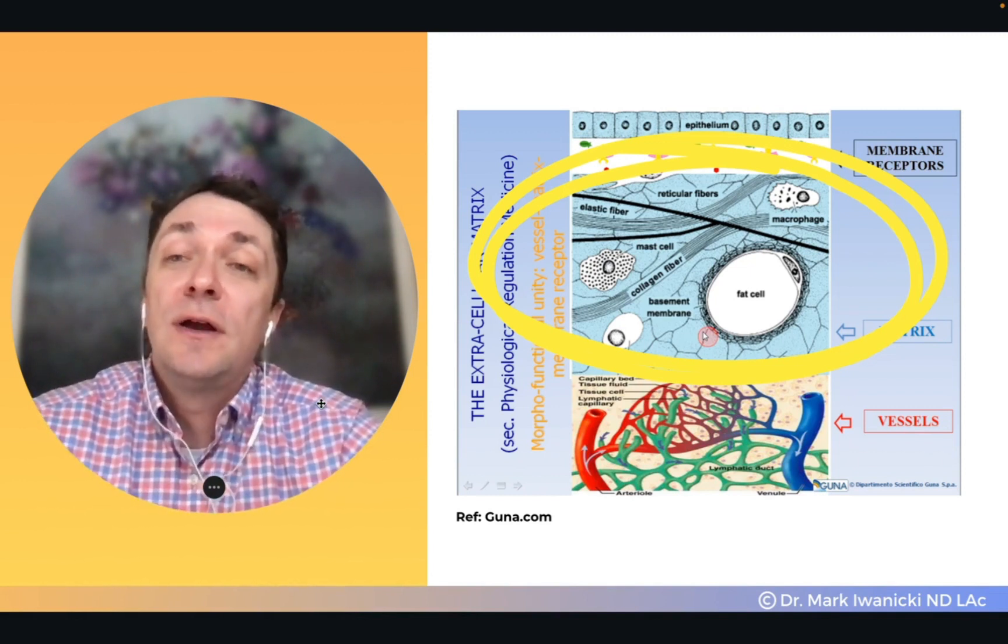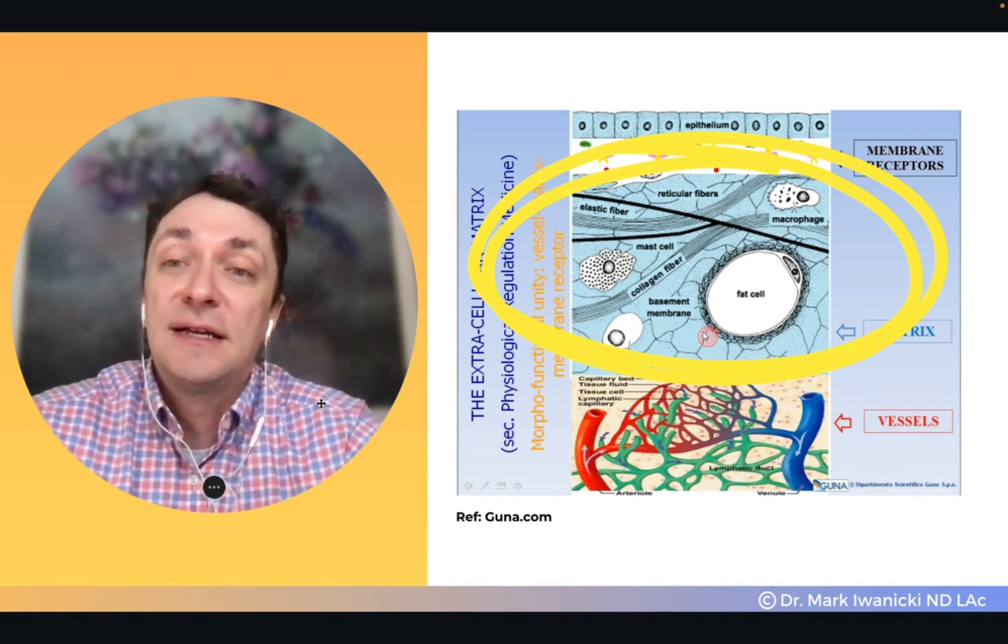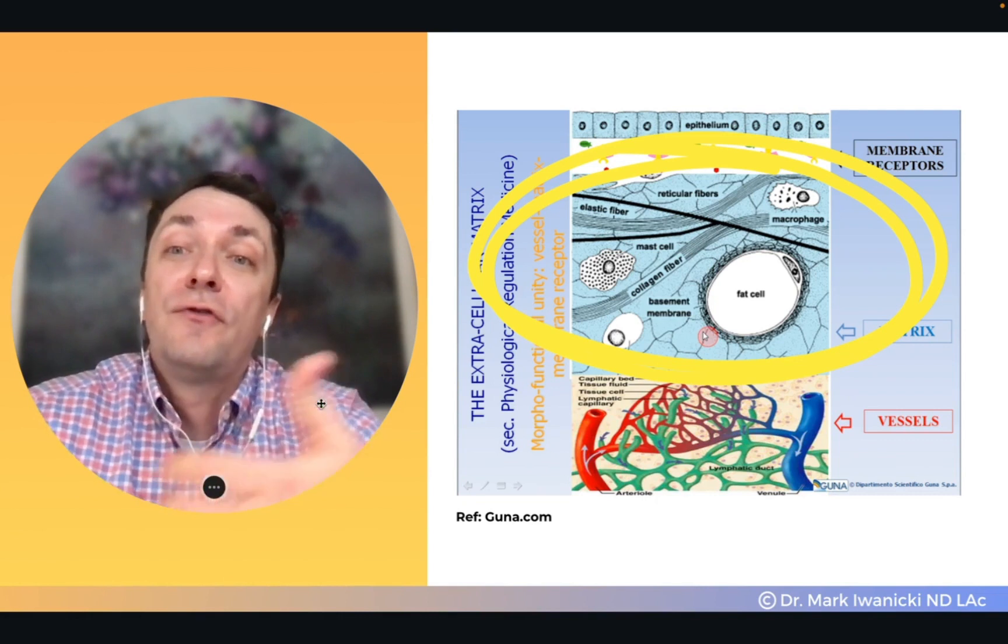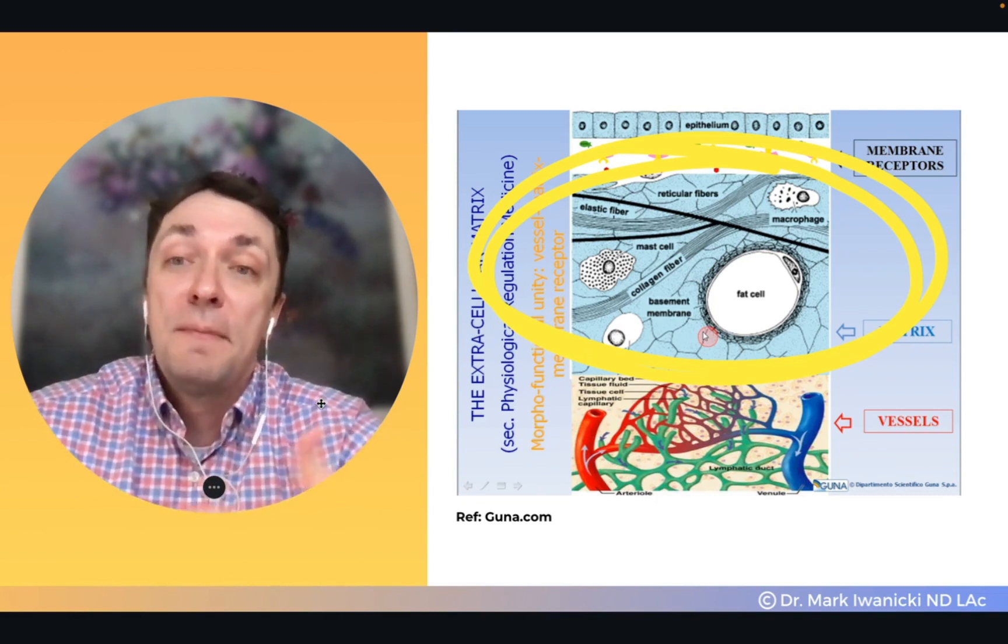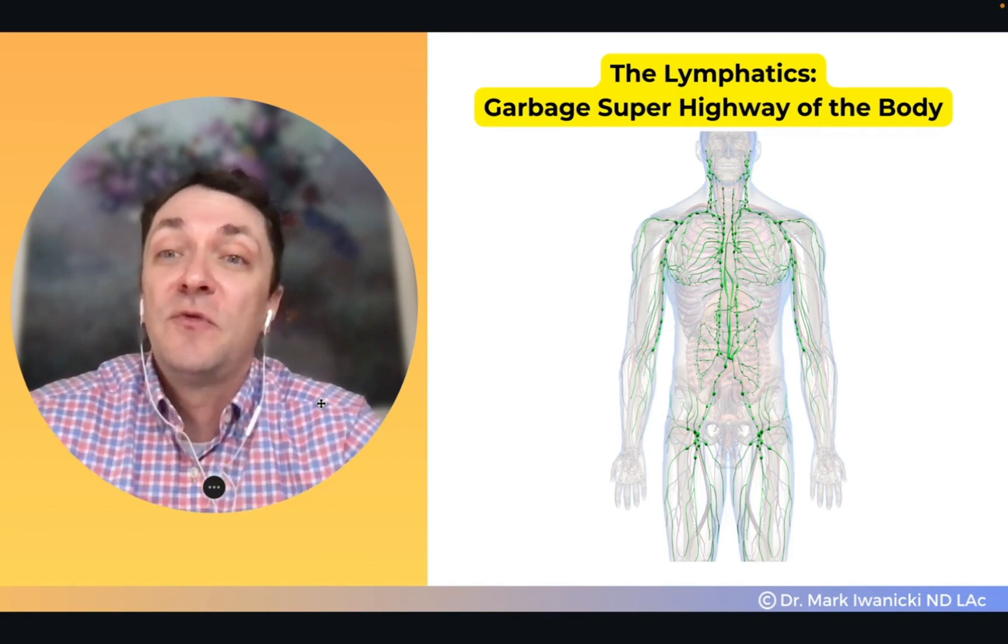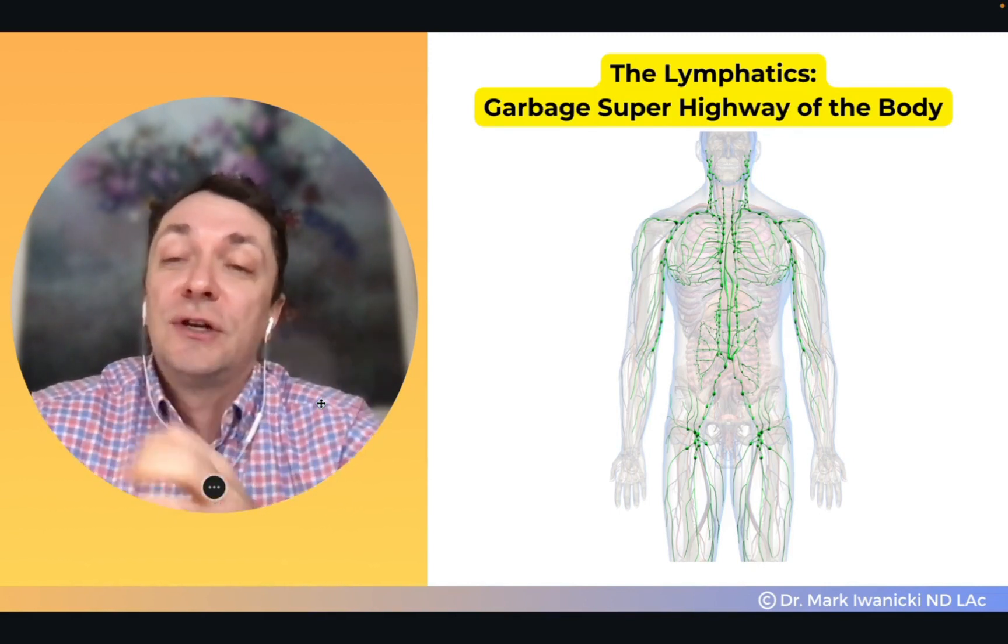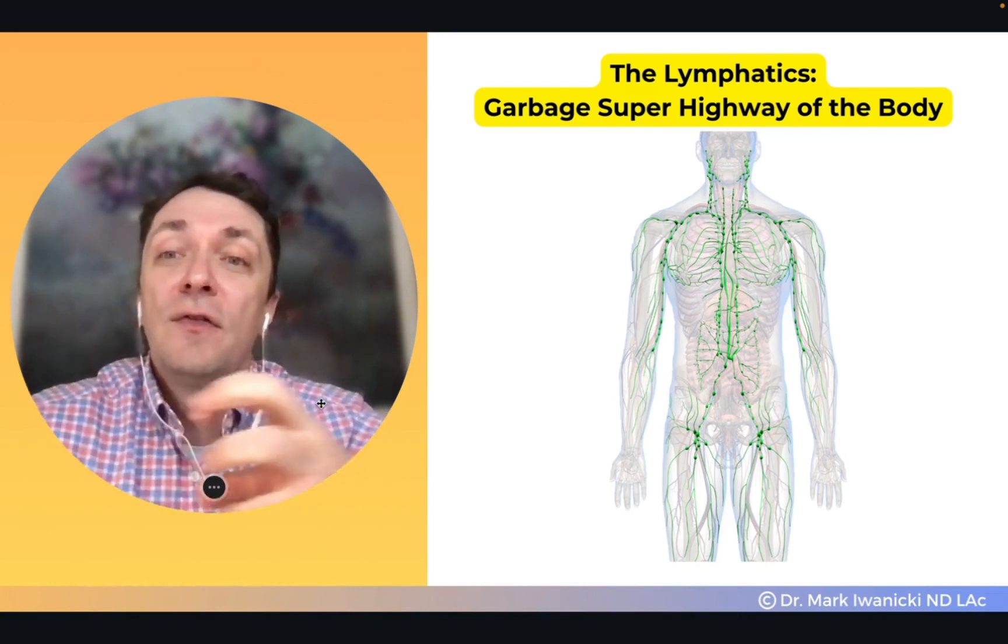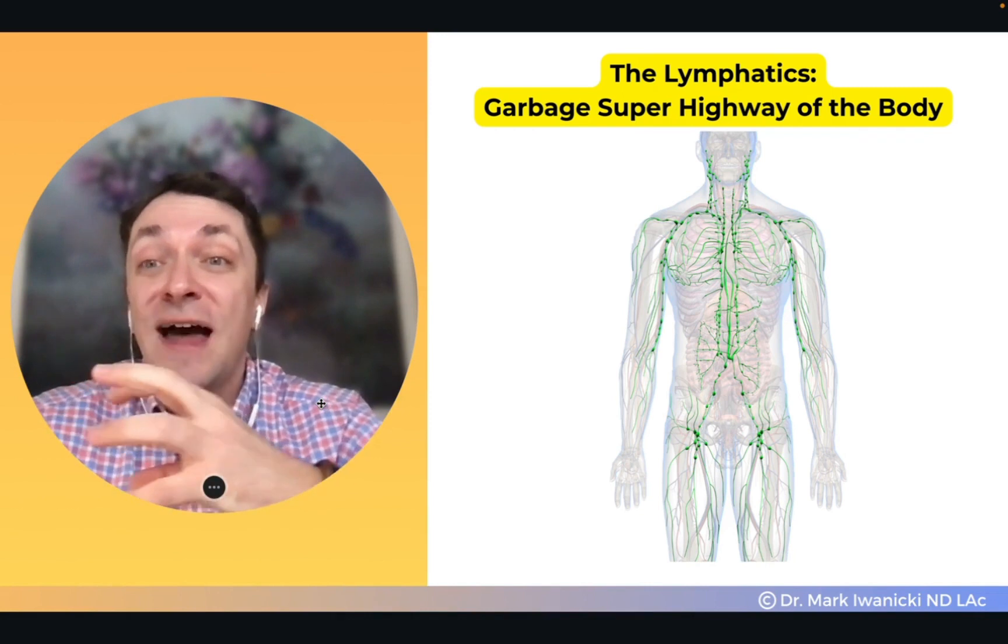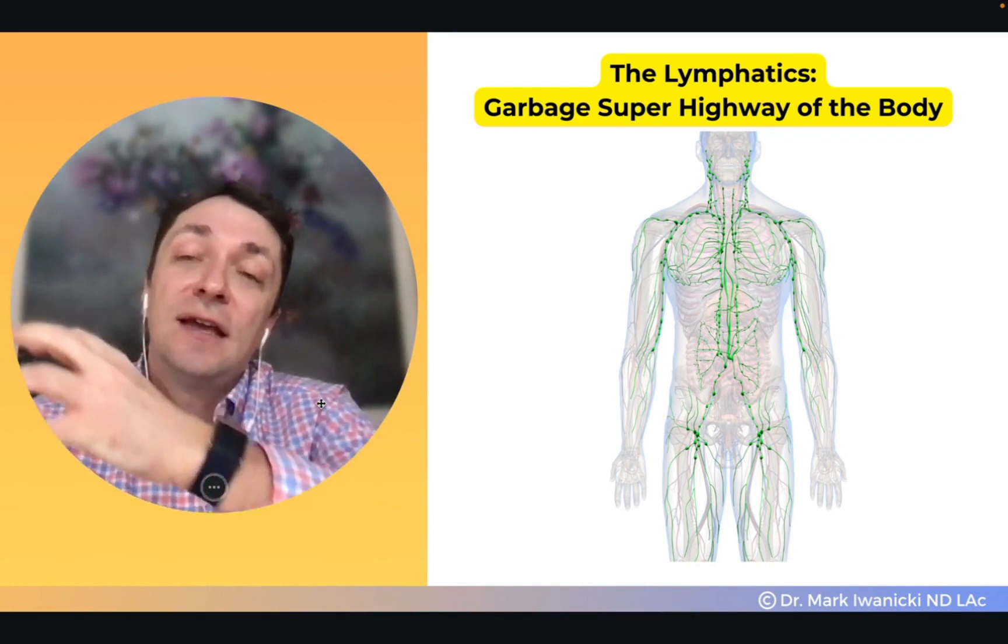It's the space where the cells of our bodies dump all this metabolic waste to be processed. How does it get removed from that extracellular matrix space? By the lymphatic system. The lymphatic system is like a garbage collection superhighway. It collects all this waste being dumped from the cells, sucks it up into lymphatic circulation. Your lymphatic system has vessels that take this garbage and collect it from every single cell in the body.